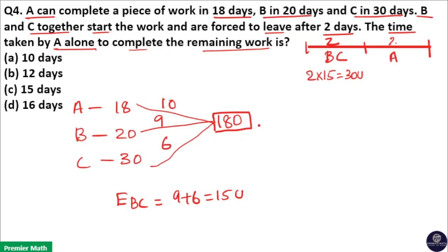So the remaining work is 180 minus 30 which is equal to 150 units which is completed by A. And efficiency of A is 10 units. That means the remaining work 150 units is completed by A in 150 by 10 which is equal to 15 days.